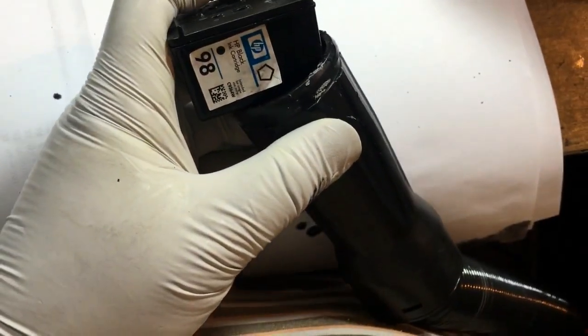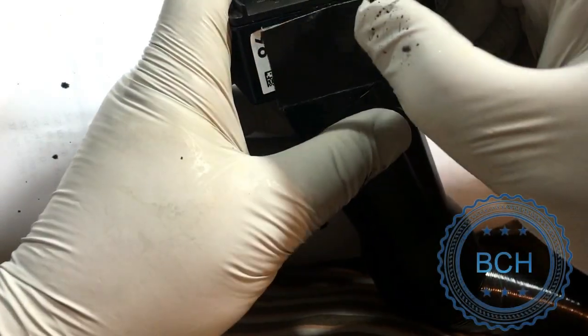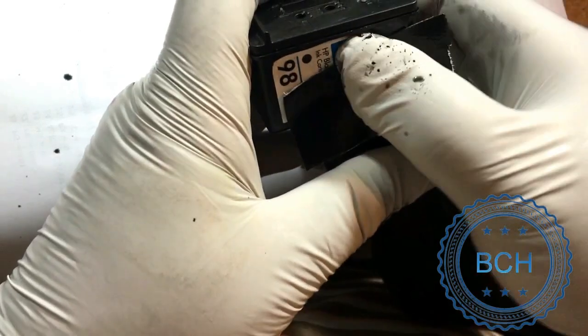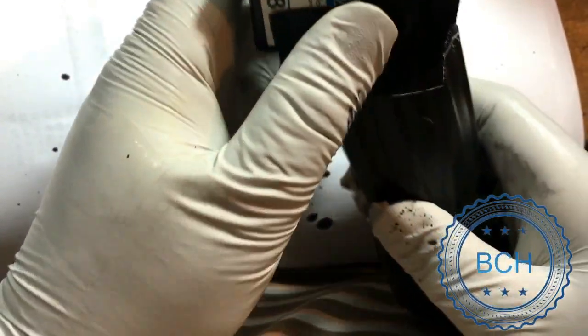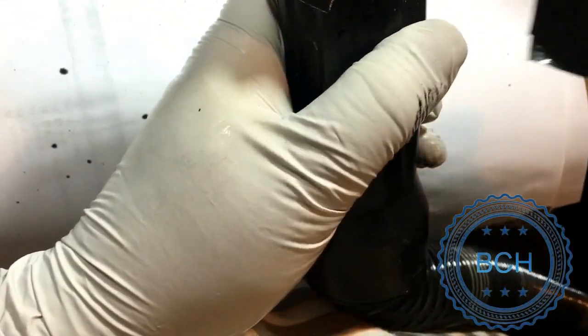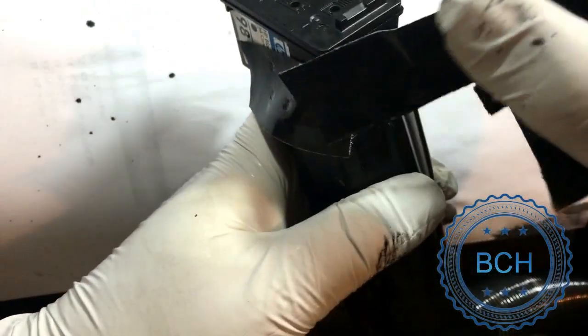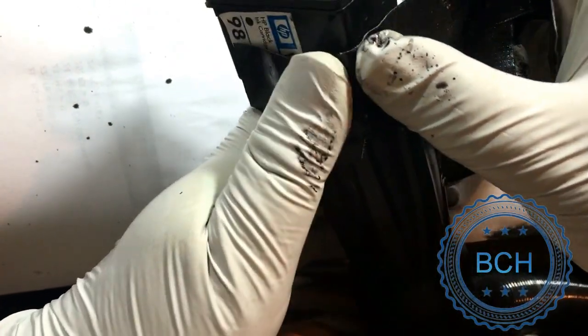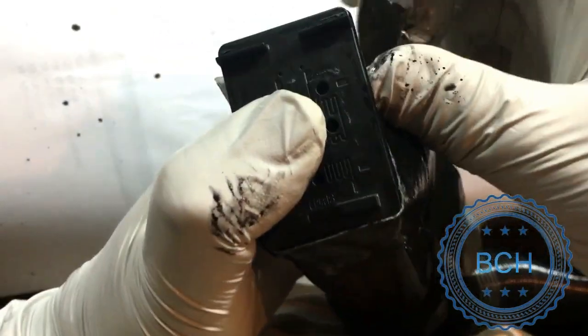Method 3. We used a household vacuum machine. We duct taped the cartridge on the hose. The vacuum will suck air from the printhead. You will not have a good view of the printhead while doing this. So we vacuumed for few seconds, did a test, then vacuumed few more seconds.